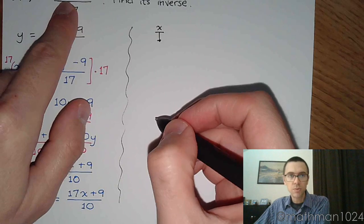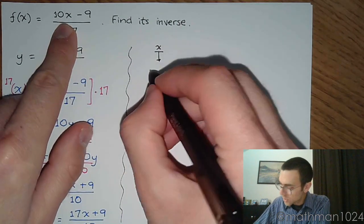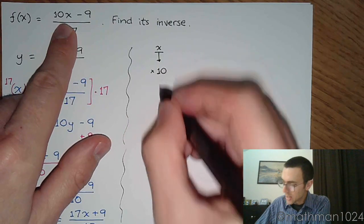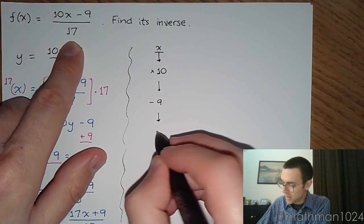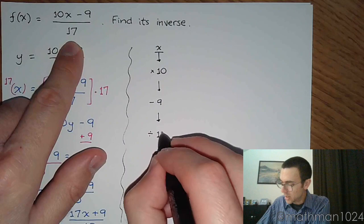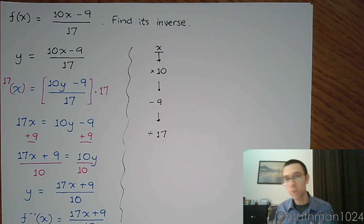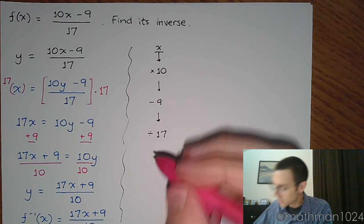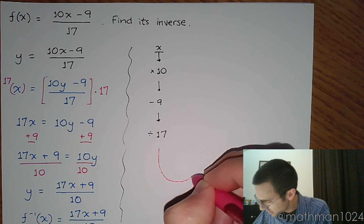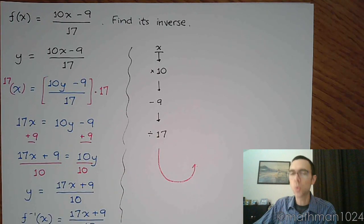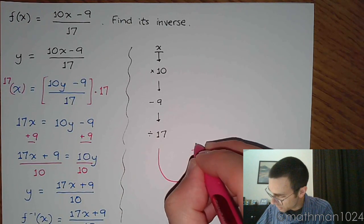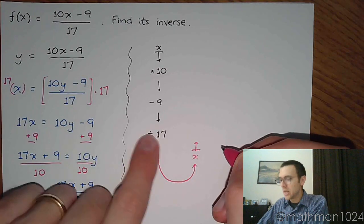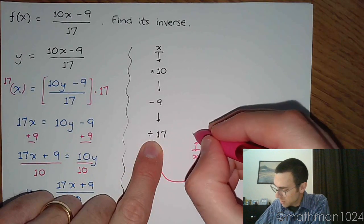The first thing you do is that you are multiplying times 10. After you multiply times 10, you subtract 9. After you subtract 9, you then divide that result by 17. That's what the order of operations states whenever you plug a number into this function. The inverse is going to do all of these guys in a backwards order with the inverse operation of each. So you start with x, and what do we do? Well, the inverse of dividing by 17 is to multiply times 17.